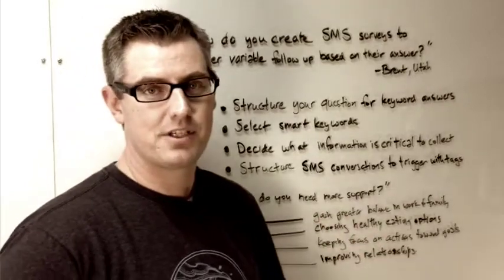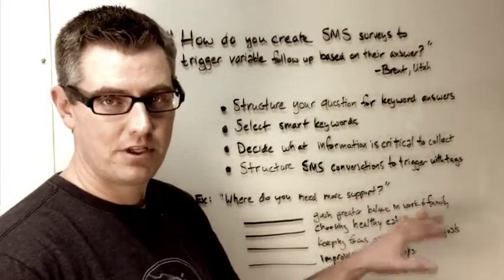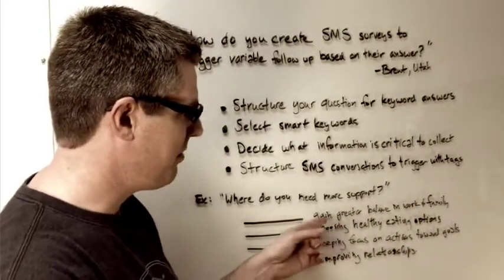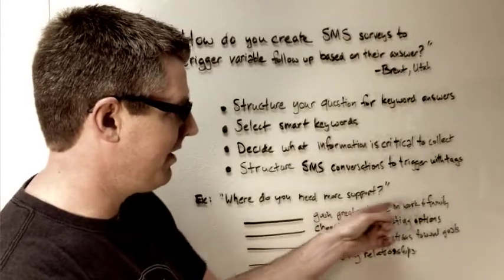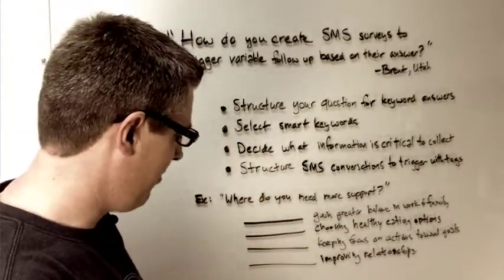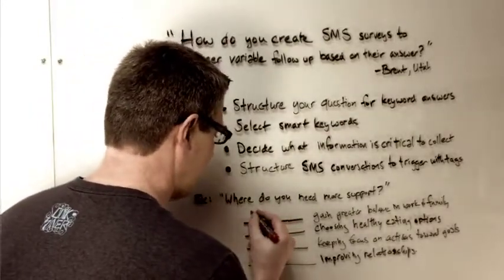Now, obviously, your business may be different, and so you would have different questions and different answers. But try and follow along and see how would you respond to this. What would you say should be the keyword for gain greater balance in work and family? Now, remember, we've got to select smart keywords. I'm going to recommend for this one, we'll just go with balance.